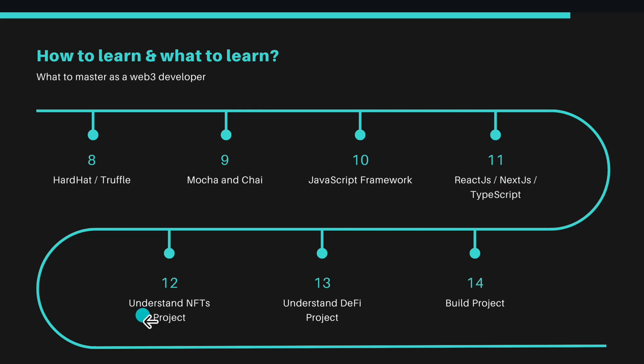After that, understand how NFTs work exactly and how to build different models and projects using NFT features in smart contracts. Then understand how DeFi works — how decentralized exchanges operate, how liquidity works, how protocols interact, how to stake tokens, create reward logic, and build ERC20 tokens. After understanding NFTs and DeFi, build your portfolio projects. The two I recommend are an NFT marketplace and a Uniswap clone, plus a token staking DApp for DeFi. These three projects are must-haves for your portfolio and will give you a strong foundation covering everything in this roadmap.